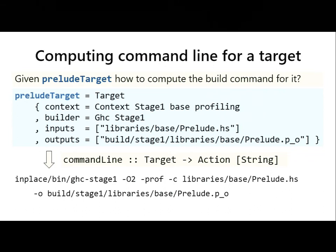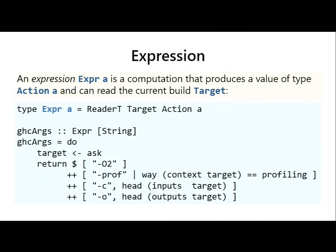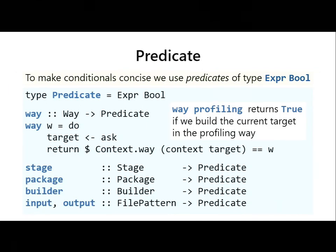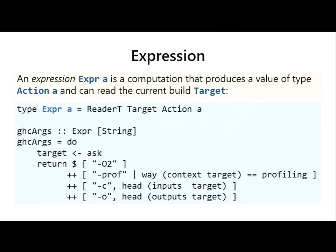We want a function from a target to a command line — a list of strings, possibly doing some computation in the action monad or looking up configuration files. The actual command line is much bigger and wouldn't fit on screen. We would get something like: invoke the GHC stage-one builder, pass the optimization option, pass the prof flag because we're building in profiling way, and pass the source file and resulting object file. This pattern is just a reader monad, which is exactly what we use to compose command line descriptions. We have a type Expr A, which is a computation that reads the target, does computations in the action monad, and returns a value of type A. It always adds O2, conditionally adds dash-prof, and adds the input and output files.